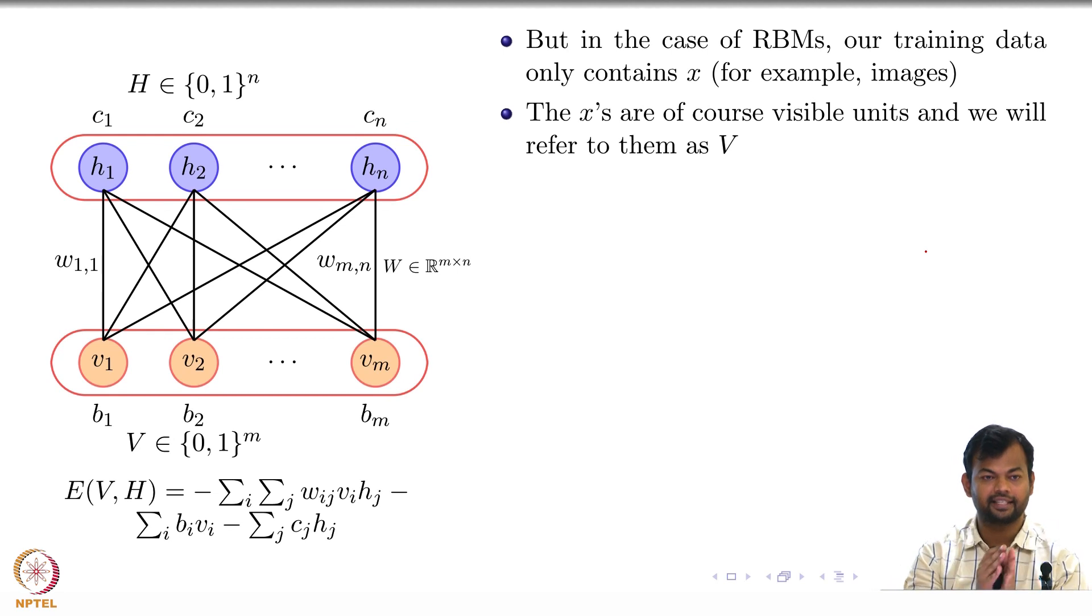So instead of saying that X is equal to X_1 to X_n, I am going to say that it is V, right, V_1 to V_m. So instead of Xs I am just going to denote them by V.